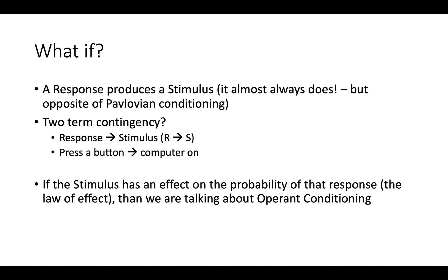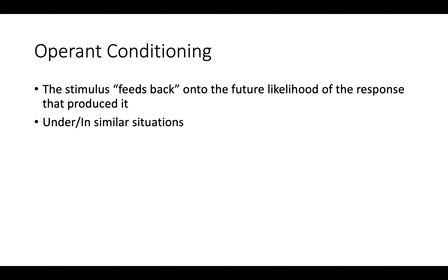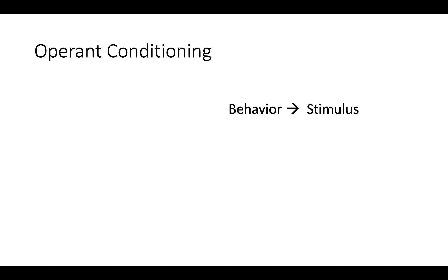What if there's some dependency between stimuli being presented based on responses? This is a two-term contingency where a response produces a stimulus — like when you press a button on your computer and your computer turns on. If this particular stimulus that's just been produced has an effect on the probability of that response in the future, we call this the law of effect. In this arrangement, we're not talking about Pavlovian or respondent conditioning anymore. We're talking about operant conditioning, because the relation is reversed: a response produces an important stimulus.